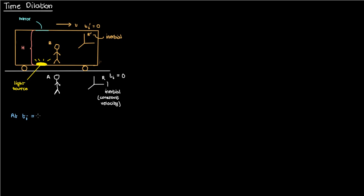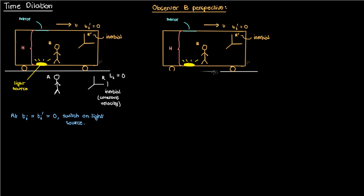As soon as the clocks in both reference frames are set to 0, we'll have observer B switch on the light source so that it fires a ray of light towards the mirror. At this point we're going to make two point-of-view drawings, starting with the point of view of observer B — the observer in the train moving along with the light source in reference frame R'.